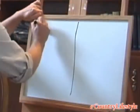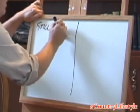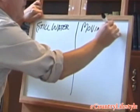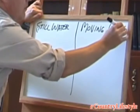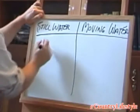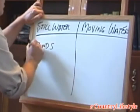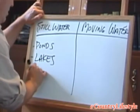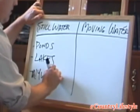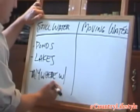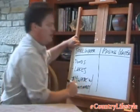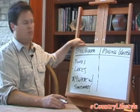First of all, I'd like to go over with you the two main types of water. You have still water and moving water. Still water will include ponds, lakes, and anywhere where you have stationary water — water that is not moving. This could be a canal near a dam where water isn't moving.